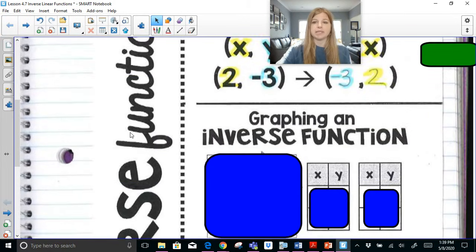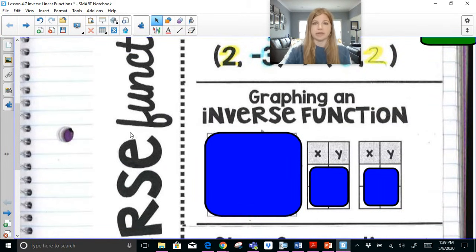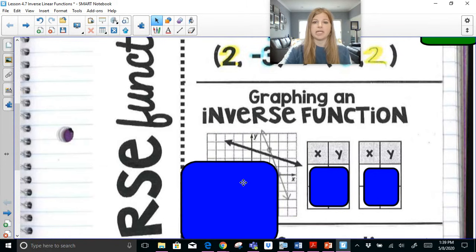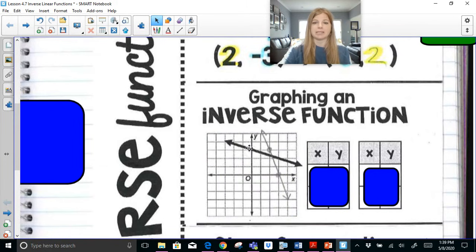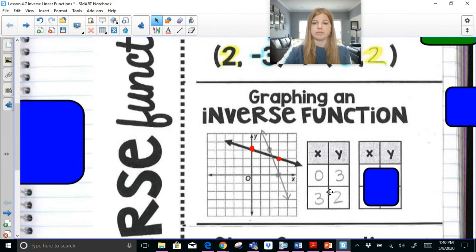Now the second thing we need to learn how to do is graph an inverse function. So if I gave you this black solid line here and I asked you to graph the inverse, you would want to find a couple ordered pairs that you know for a fact are on this line. So (0, 3) and (3, 2).